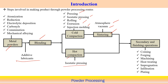From this powder-derived solid component we can perform secondary operations such as coining, forging, machining, and heat treatment. Finishing operations include infiltration, plating, and other such processes that can be done on the powder component. These are the steps involved in making a product starting from powder.